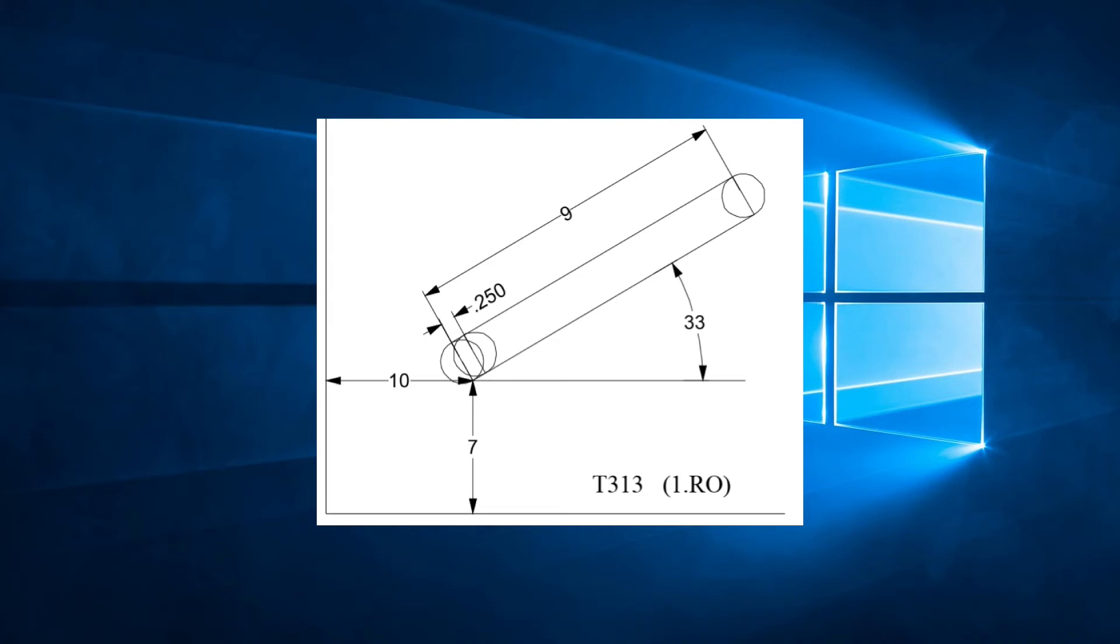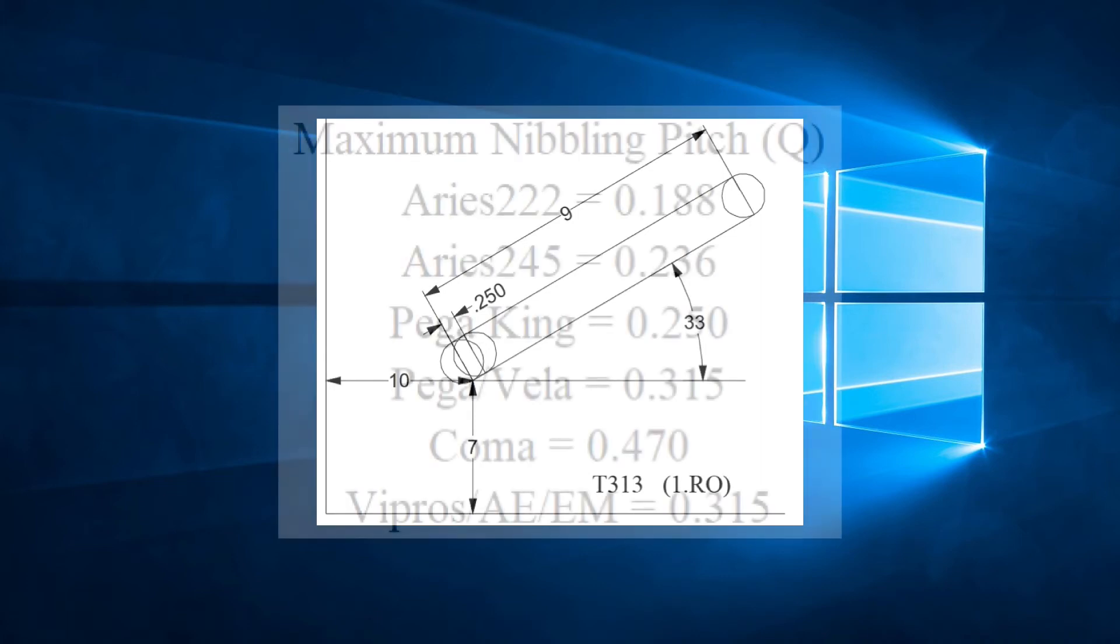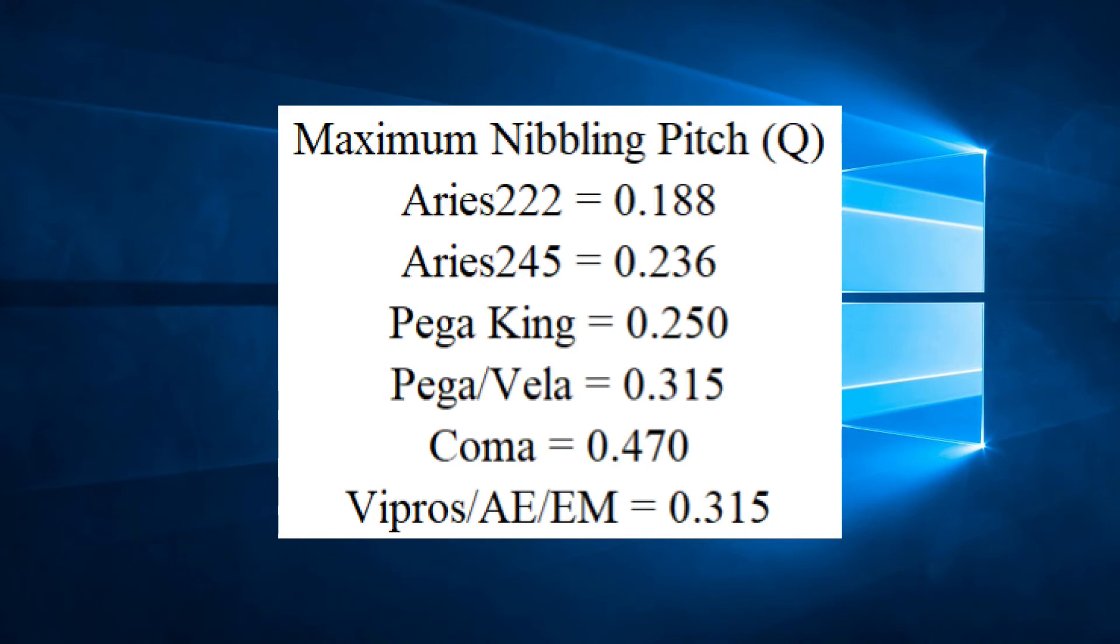The second limitation is that the pitch, Q, must be between the material thickness and the maximum allowable nibbling pitch for our particular machine. Remember, each machine has its own maximum nibbling pitch. Please refer to your machine manual for this number. We will be using a PEGA 357 and the maximum nibbling pitch for this machine is 0.315 inches or 8 millimeters. The drawing specifies a pitch of 0.25 which is less than 0.315 so in this case we can use G69.